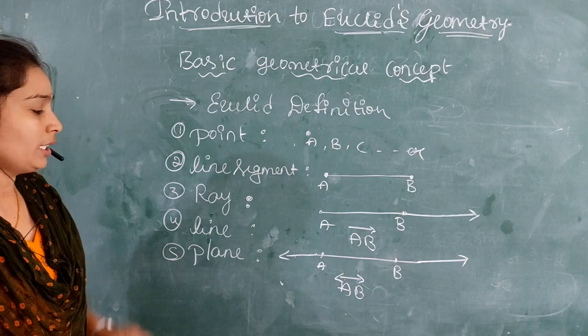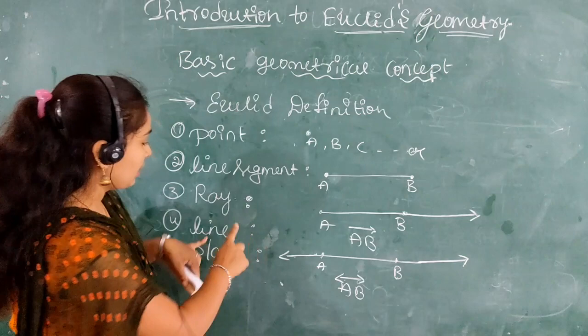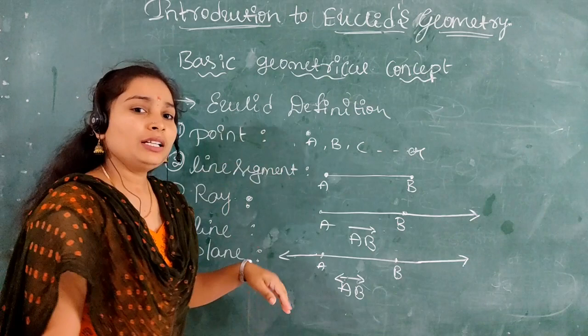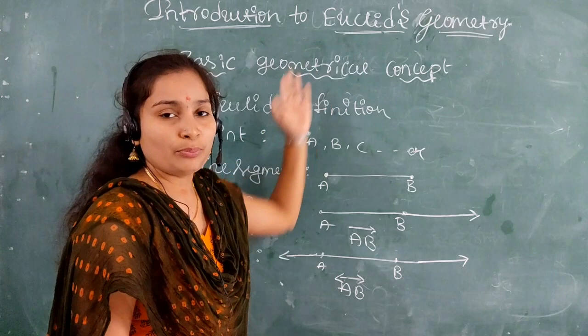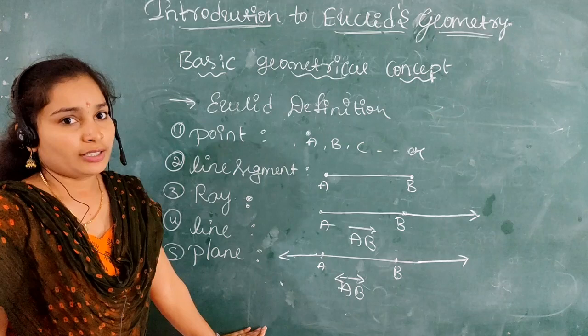The last definition is plane. A plane is a surface such that every line joining two points on it lies entirely on it. For example, you can take a board or paper sheets as surrounding examples of a plane. These are the key definitions.